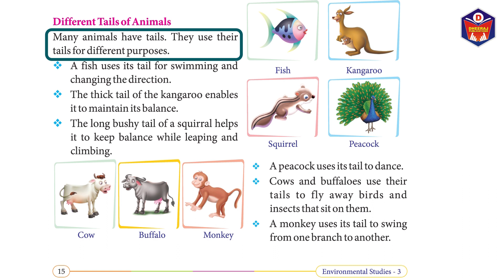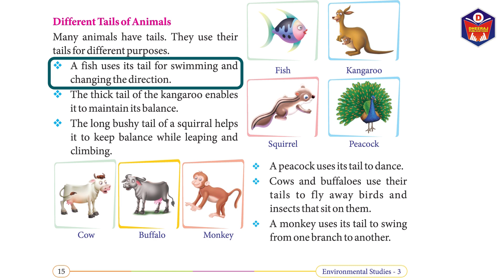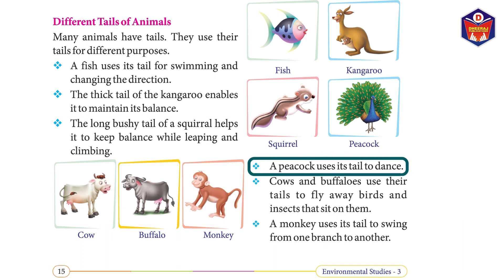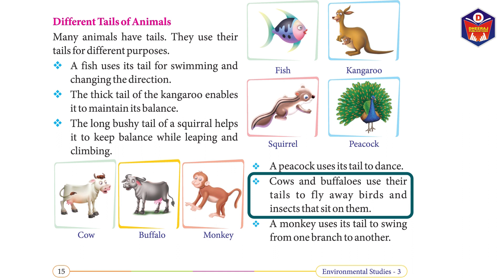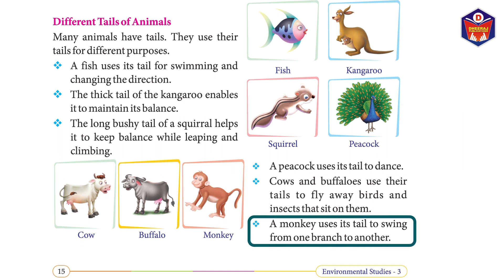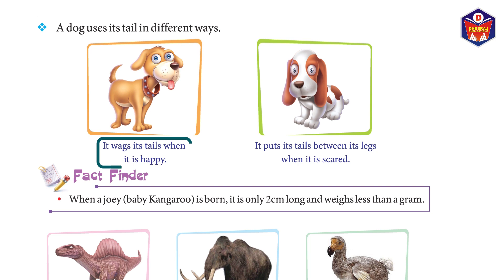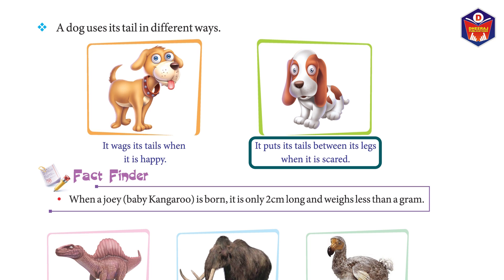Many animals have tails and use them for different purposes. A fish uses its tail for swimming and changing direction. The thick tail of the kangaroo enables it to maintain balance. The long bushy tail of a squirrel helps it keep balance while leaping and climbing. A peacock uses its tail to dance. Cows and buffaloes use their tails to fly away birds and insects. A monkey uses its tail to swing from one branch to another.